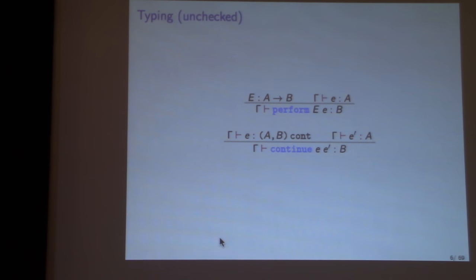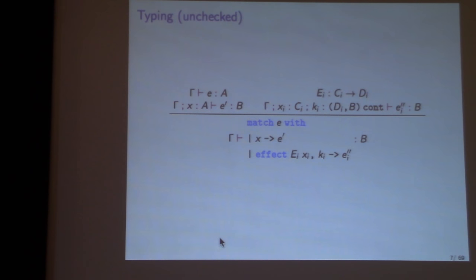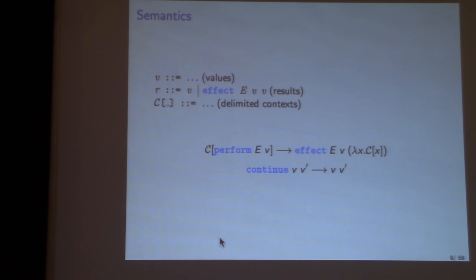In this first part of the talk we're not tracking effects in the type system, so the typing is very simple. Perform and continue are much like applications: if the operation goes from A to B and you give it an A, you get a B. The match rule looks more involved but is pretty much what you'd expect — all right-hand sides have type B. The semantics are best understood by analogy with exceptions, so let's move on to examples.